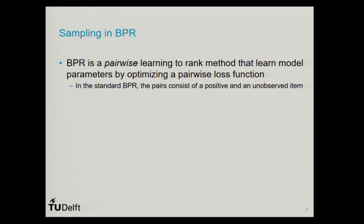For people who might not be familiar with how BPR works — and you probably see a lot of people at this conference use BPR or at least compare their method with BPR — BPR is a pairwise learning-to-rank method. The model parameters are learned by finding the right order of items in a given pair. We also need pairs of positive and negative items in order to train the model.